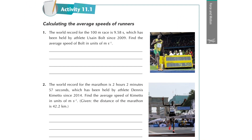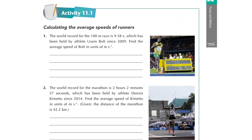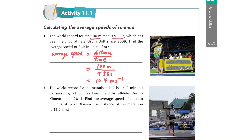Here are two more examples to try yourself. First is the world record for the 100-meter race. The world record is 9.58 seconds. To find the average speed, we use the same equation — distance over time — substituting 100 meters and 9.58 seconds to get the value in meters per second.